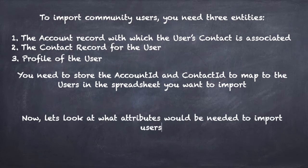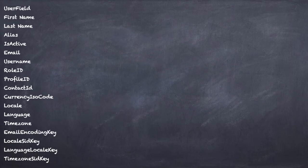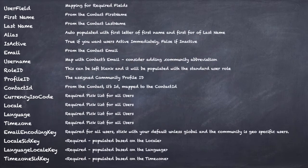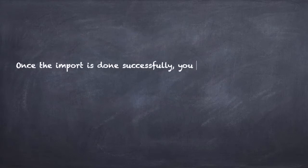Let's look at the attributes needed to import users. These user fields include: first name, last name, alias, is active, email, username, role ID, profile ID, contact ID, currency ISO code, locale, language, timezone, email encoding key, locale SID key, language locale key, and timezone SID key. Once the import is successfully done with all these attributes, you need to send out the welcome emails to your new community users.